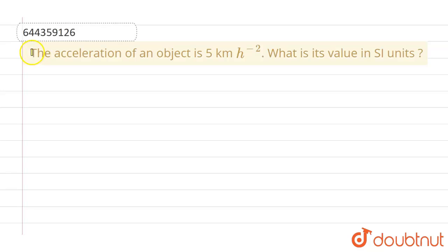Hello everyone. If we talk about this question, this given question is the acceleration of an object is 5 km per hour square. What is its value in SI units? So, the given acceleration is 5 km per hour square.